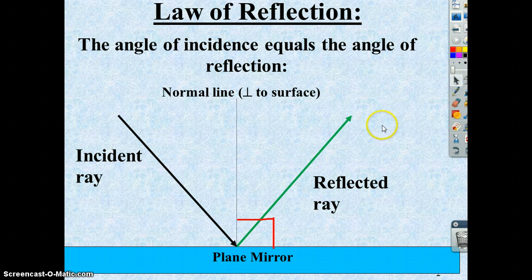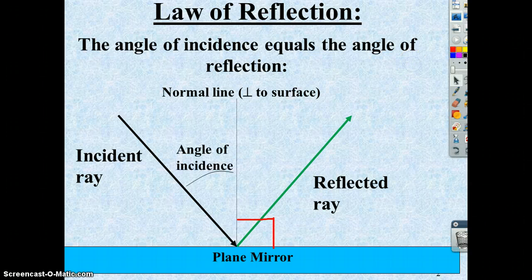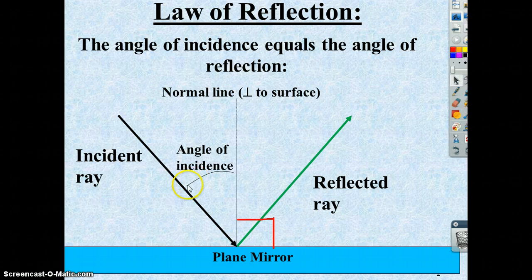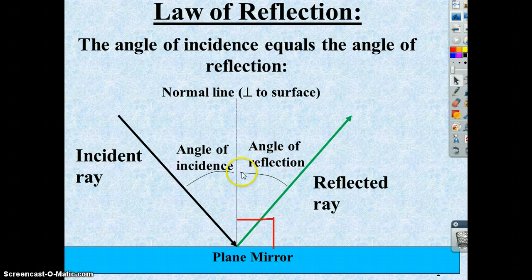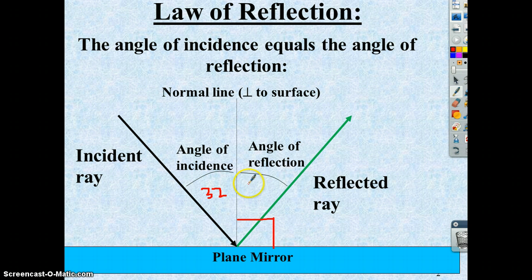In continuing here, the angle of incidence is measured from the incident light ray to that normal line. The angle of reflection is measured between the reflected ray and the normal line. And in all instances, the law of reflection states that these two angles are equal to each other. So if this angle here was, say, 32 degrees, this angle in here would be 32 degrees. And the entire angle between the incident ray and the reflected ray then would be, in this instance, 64 degrees.